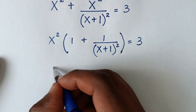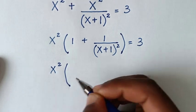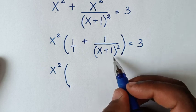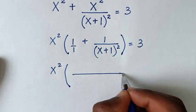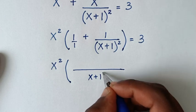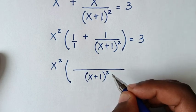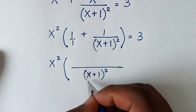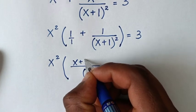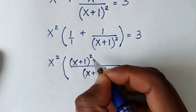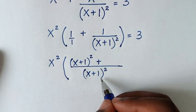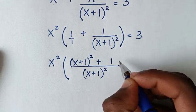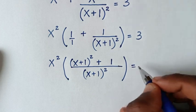In the next step it will be x² times the bracket. The LCM of 1 and (x+1)² is (x+1)². Dividing by 1 gives (x+1)², then (x+1)²/(x+1)² is 1, so plus 1 in the bracket, equals 3.